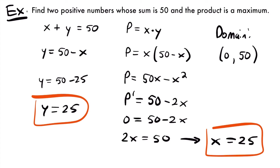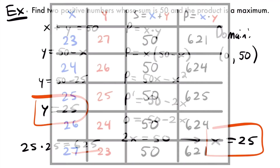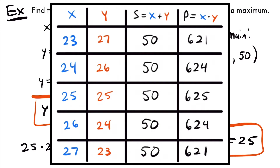If you multiply 25 by 25 you get 625, which is the maximum product for this scenario. A chart shows the products of pairs of positive values adding to 50 around 25, and you can see that as you pick pairs other than 25 and 25, the product decreases. So we can be sure that 625 is our maximum product. Feel free to pause to look at the chart longer.